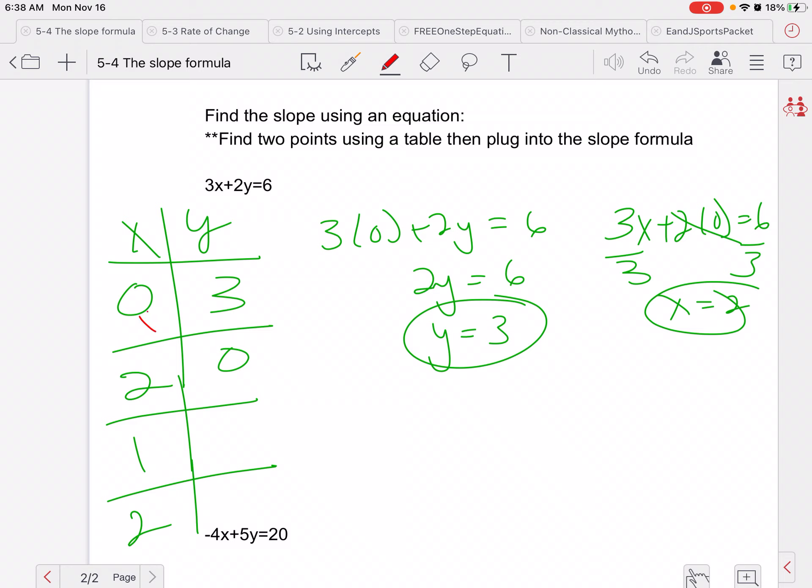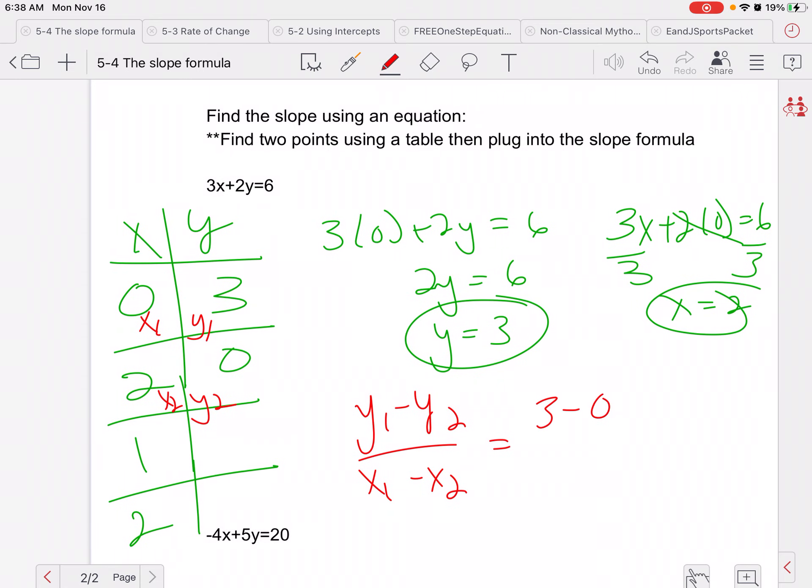So we'll have x1, y1, x2, y2. So again, my formula is y1 minus y2 over x1 minus x2, which is going to go ahead and give me 3 minus 0 over 0 minus 2, which gives me 3 over negative 2.